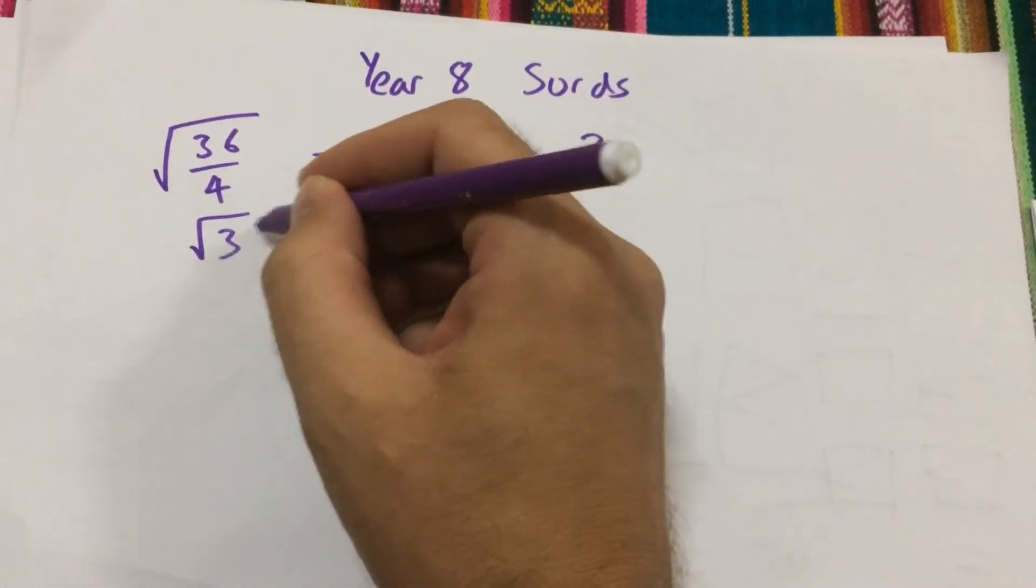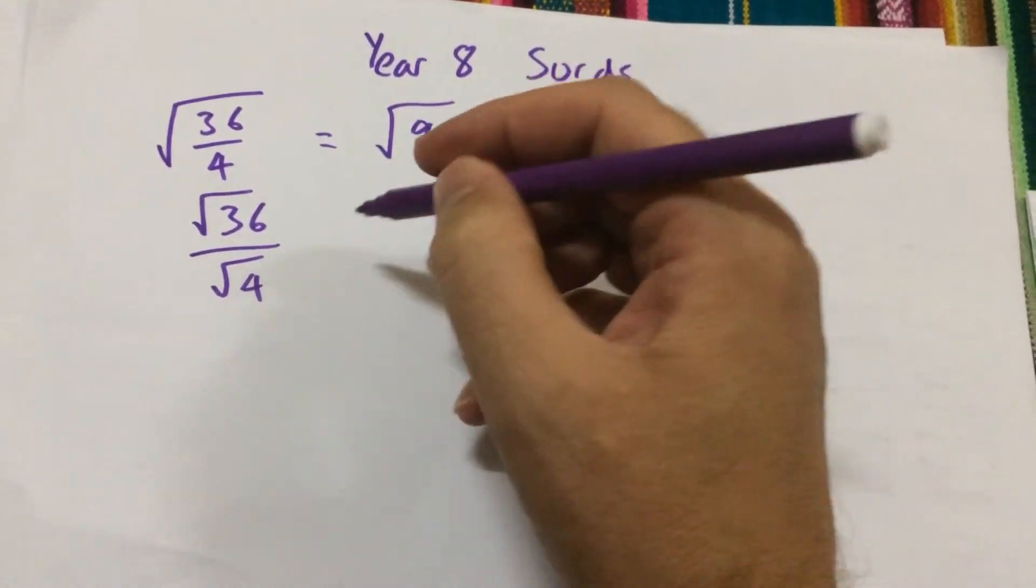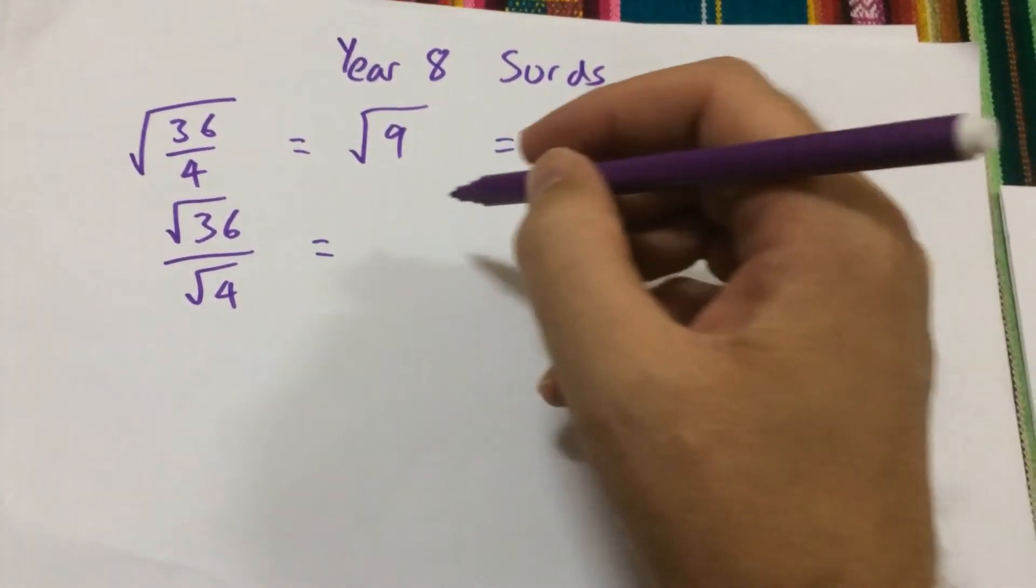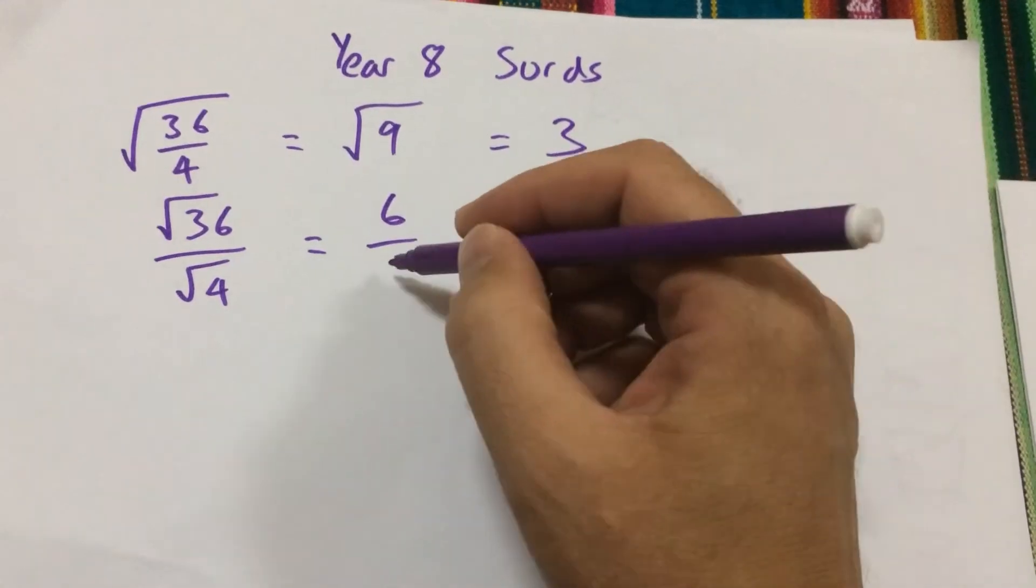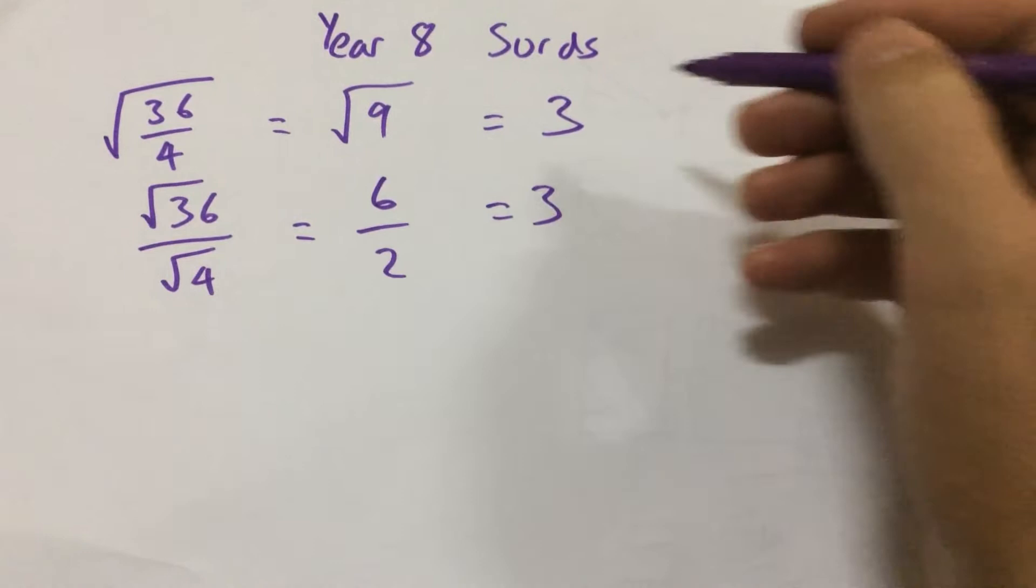Now, if we look at the square root of 36 divided by the square root of 4 separately, well, the square root of 36 is 6, the square root of 4 is 2, and 6 divided by 2 is 3. That's the same.